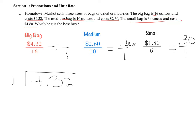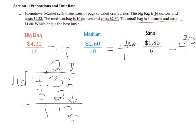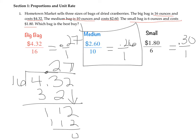So 16 will go in twice, which gives me 32. That'll leave me with 11. Bring down the 2, so 112 is left over. What times 16 gives me 112? It is 7, because 7 times 6 is 42, and 7 times 1 is 7, plus that 4 is 112. So this one is 27 cents. The best buy in this problem is the medium bag, because it is the cheapest.